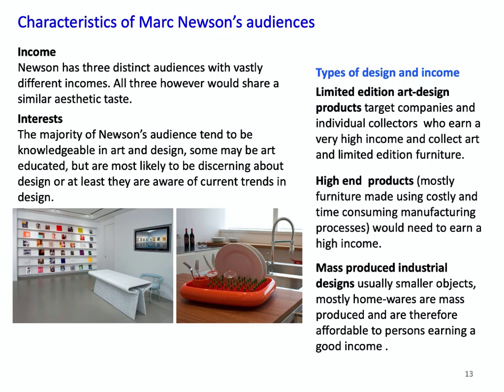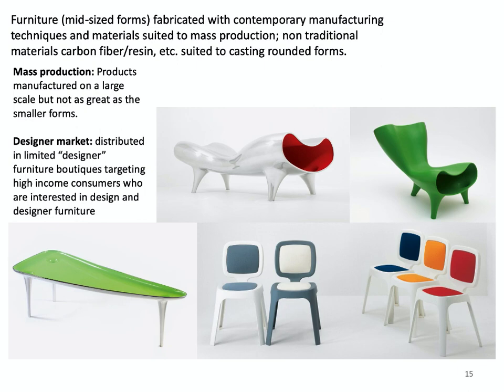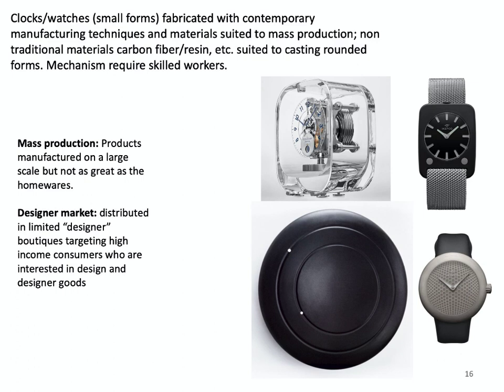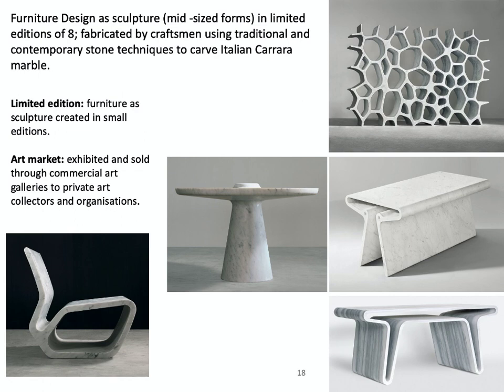Let us quickly turn to Mark Newson's audience. The key characteristics of Mark Newson's audience fall into two main categories: income and interest. While there are three distinct income groups, all three groups share a similar aesthetic taste. Each income group is able to afford a particular range of design created by Mark Newson. He has an audience for mass-produced industrial designs — these are smaller objects, mostly homewares, which are produced in very large numbers and are more affordable to persons earning a relatively good income. His audience for high-end products would be earning a higher income; these objects are mainly furniture made using costly and time-consuming manufacturing processes. Limited edition art and design products target companies and individual collectors who earn a very high income and collect art and limited edition furniture.